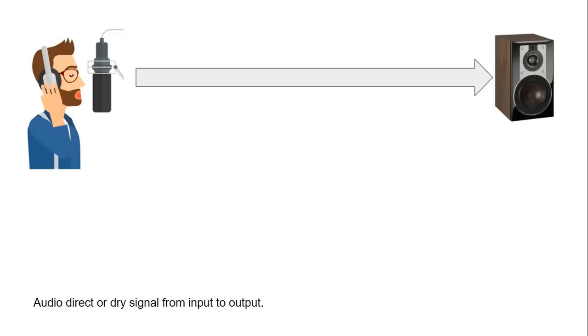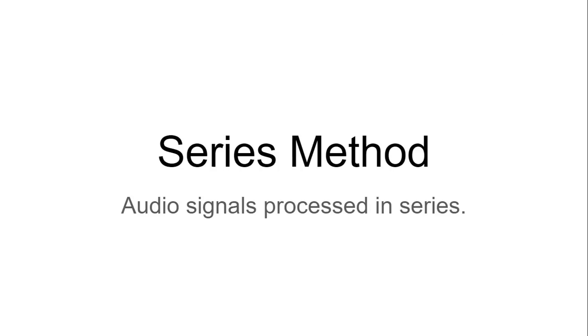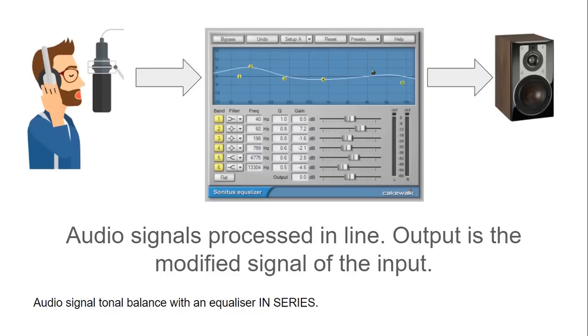There are two basic methods to modify the signal: in series method and in parallel method. In series method, audio signals are processed in series. Let's have a look at an example. An audio signal is processed in line and that means the output is the modified signal of the input.